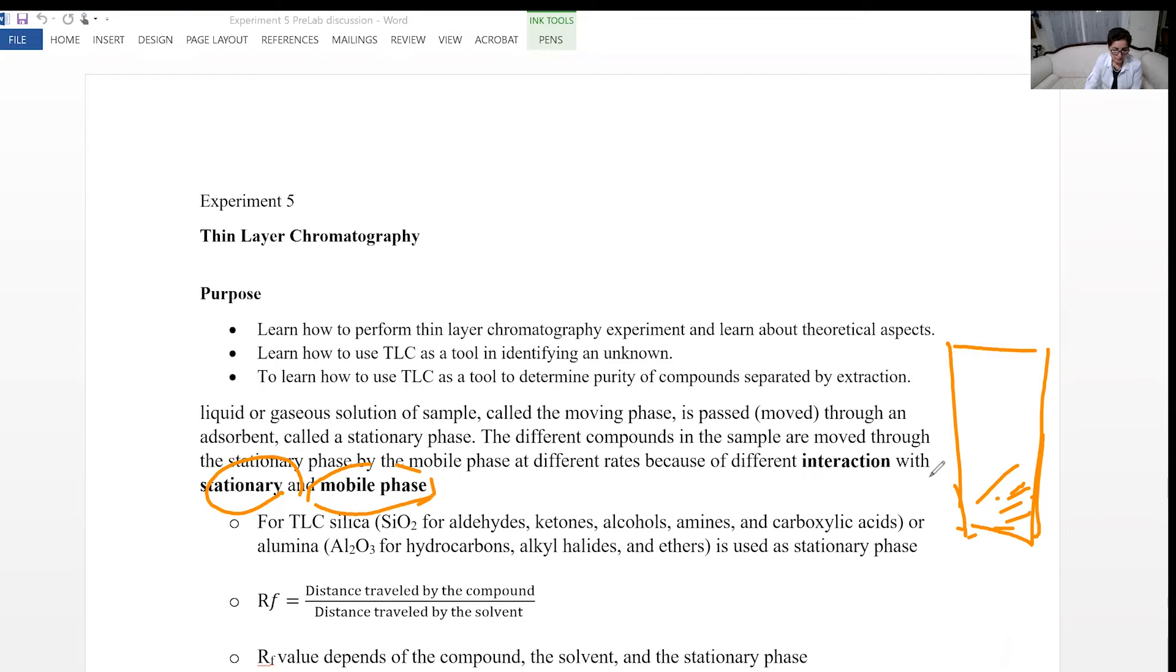Now, the silica gel, the silica is good for polar samples like aldehyde ketones, alcohols, amines or carboxylic acid. But alumina is good for more like nonpolar compounds like hydrocarbons, alkyl halides and ether. So how does chromatography actually work?